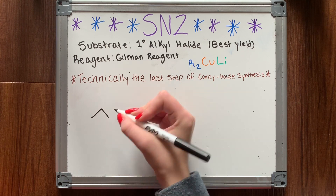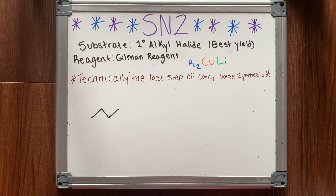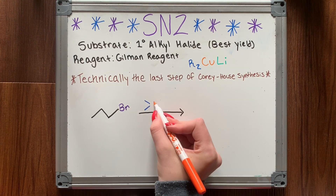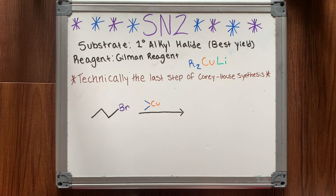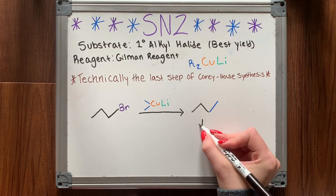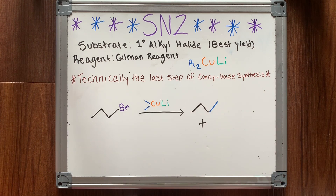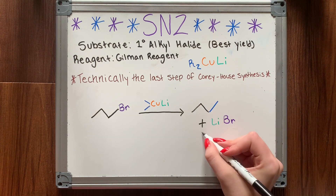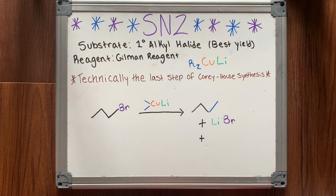This next reaction is the last step of a synthesis known as the Corey-House synthesis. It is an SN2 mechanism where your substrate is a primary alkyl halide and your reagent is a Gilman reagent — which has two R groups, copper, and lithium. One of the R groups attaches where the halide was when the halide leaves, and you get two subproducts from the rest of the Gilman reagent. The desired product is, of course, the resulting alkane.